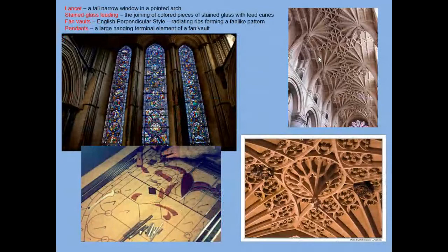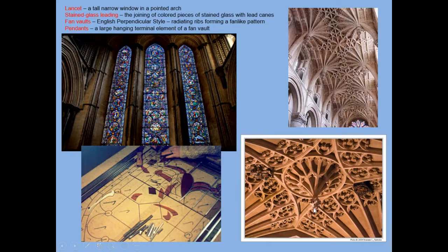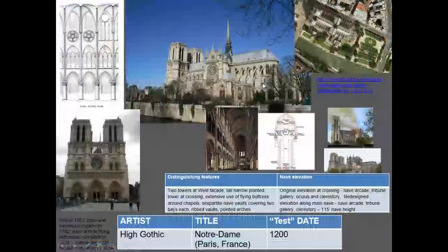The tall windows with a pointed top are lancet windows. The stained glass itself is comprised of individual separate pieces held in place by stained glass leading — literally thin pieces of lead holding sections of glass in place. When we get to England, the vaulting becomes even more elaborate in the Gothic style, and British churches have a beautiful spiderweb appearance called fan vaulting — looking like the rib of a lady's fan — with descending decorative elements known as pendants that hang downward.